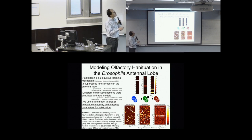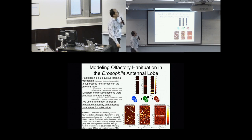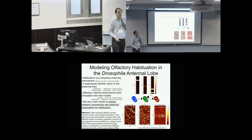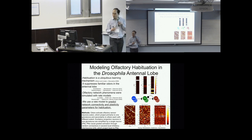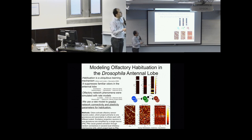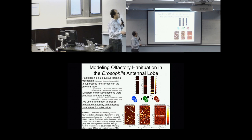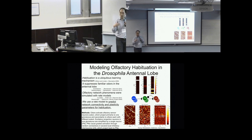We focus on habituation as a cognitive mechanism — how the animal uses it to its advantage, how familiar odors are suppressed, providing an advantage in the field. There are already many models, and Maxim and Ramon have published rate models and conductance models to show phenomena. We want to use a rate model approach to model the antenna lobe — the principal neurons and local neurons with their feedback inhibition. The plasticity of habituation is known to happen from local neurons back to the projection neurons.